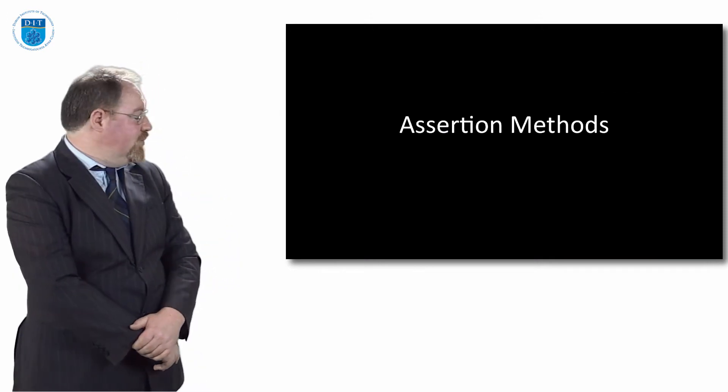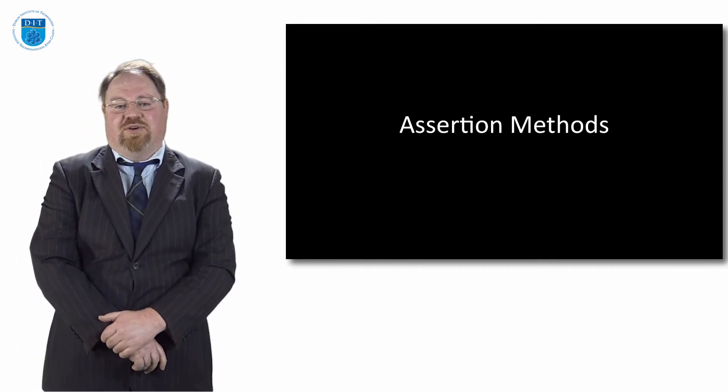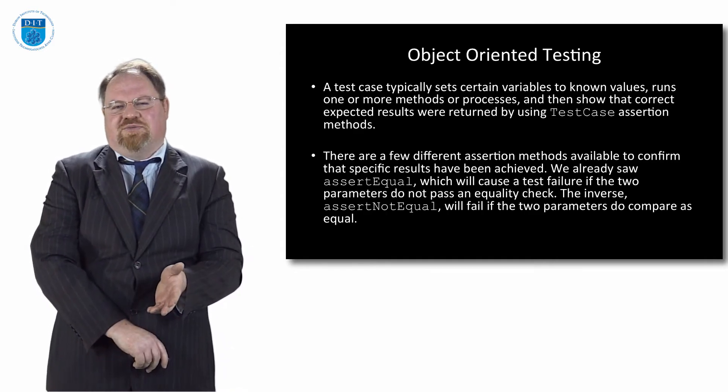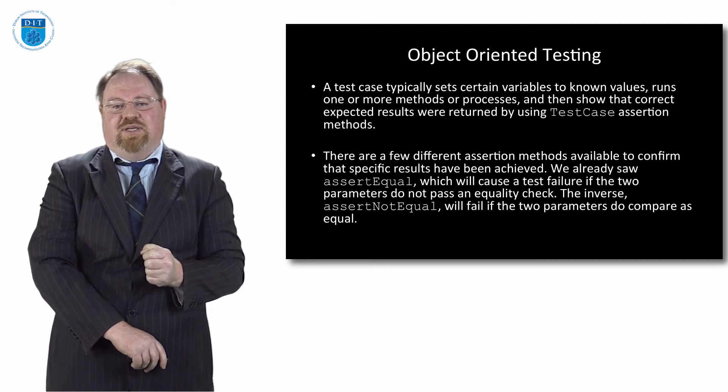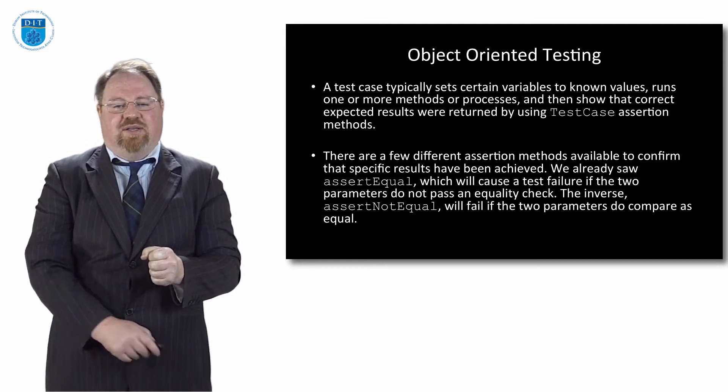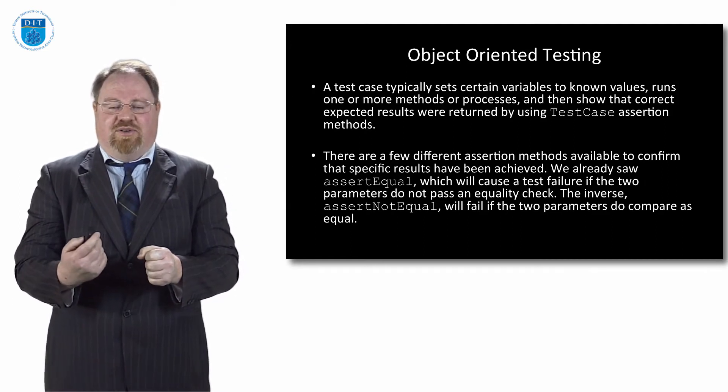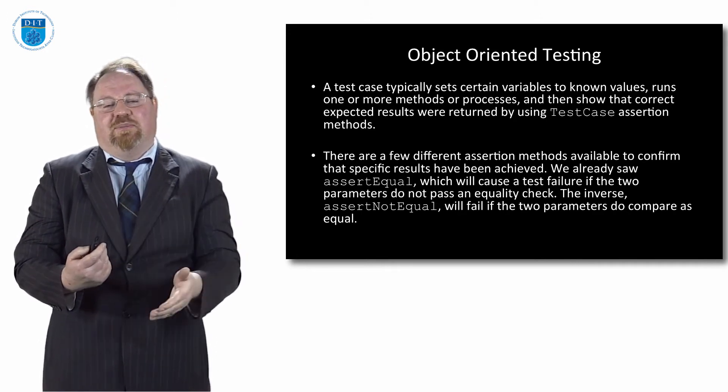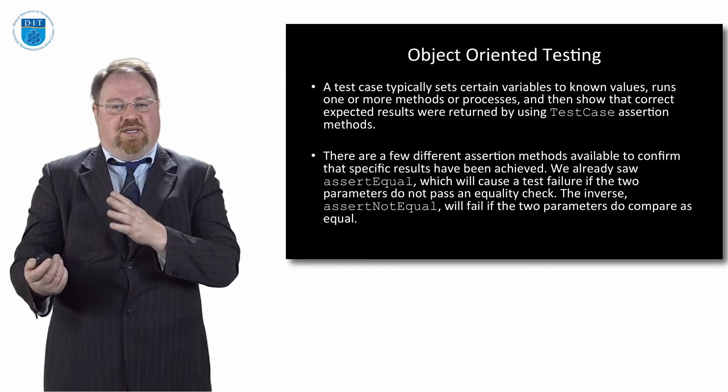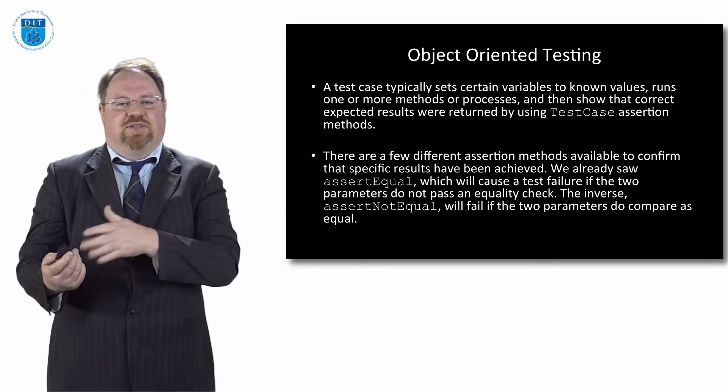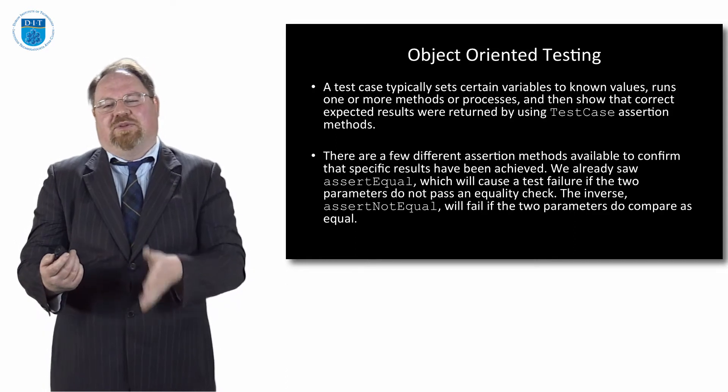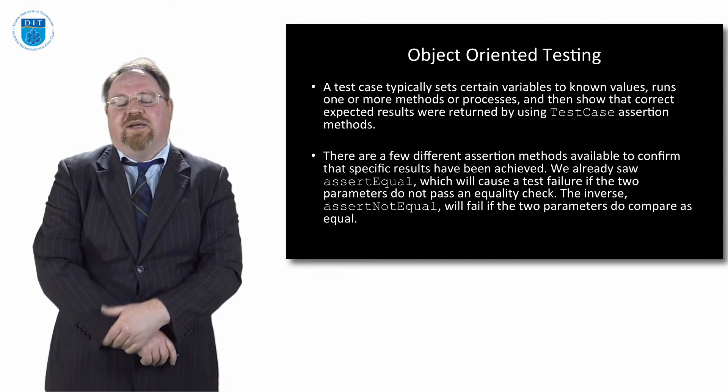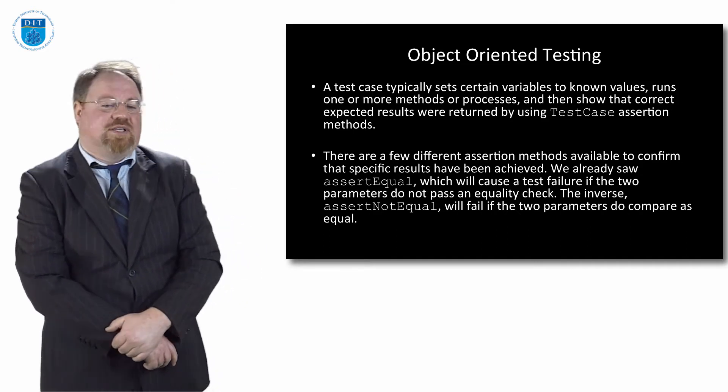So we've seen one of these assertions, assertEqual, so let's look at some other assertions. A test case is really about putting a value into the system, putting an expected value in and then putting a value in of a parameter and saying are they the same. If I have a program to double a number and I put in the number five, assert that the output is equal to 10. If I put in four, assert the output is equal to 8. It's making sure the program does what it's supposed to do. We have assertEqual and we also have assertNotEqual.